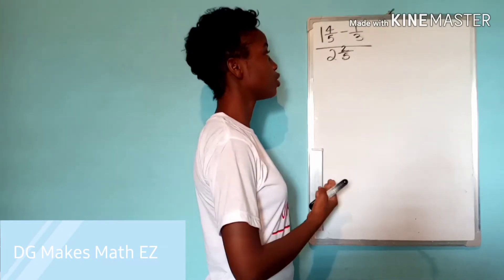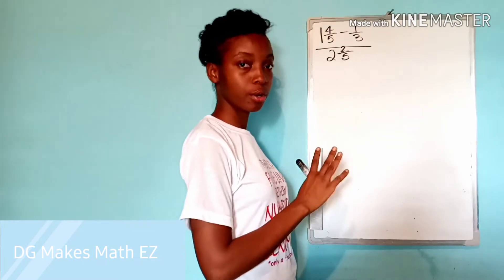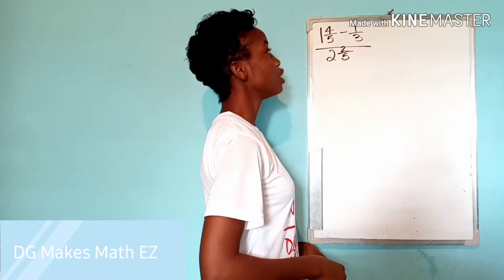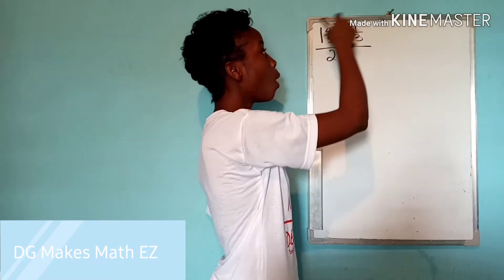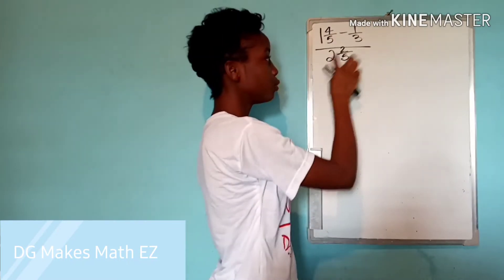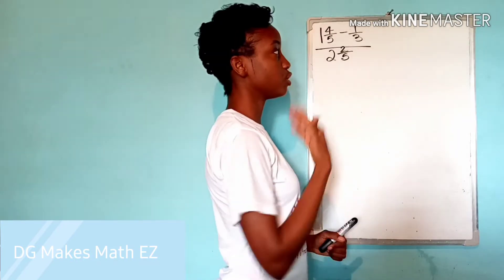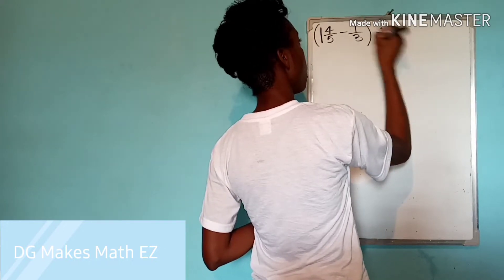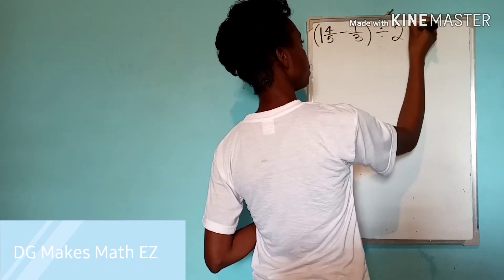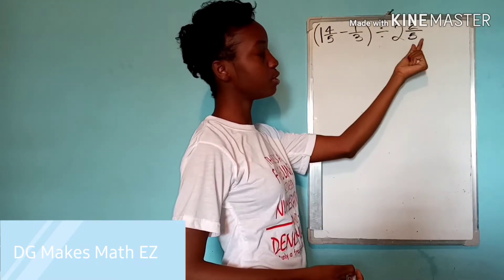Taking a look at this next question, we must ensure that we understand what the question is saying before we attempt to work it. So we should interpret this as one and four fifths minus one third, all of that being divided by two and two fifths. Which means that we can also rewrite our question to look like this.